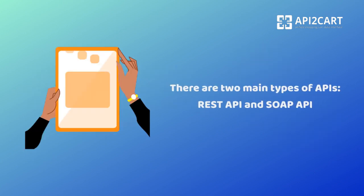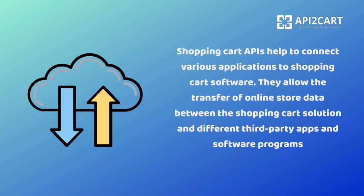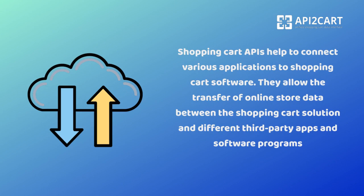There are two main types of APIs: REST API and SOAP API. The Shopping Cart API is a specific programming interface for shopping carts that allows them to communicate with other applications and transfer data for several purposes. Shopping Cart APIs help to connect various applications to Shopping Cart software, allowing the transfer of online store data between the Shopping Cart solution and different third-party apps and software programs.